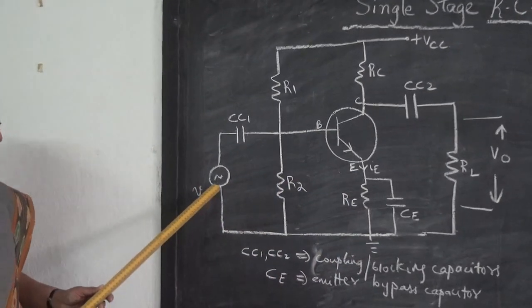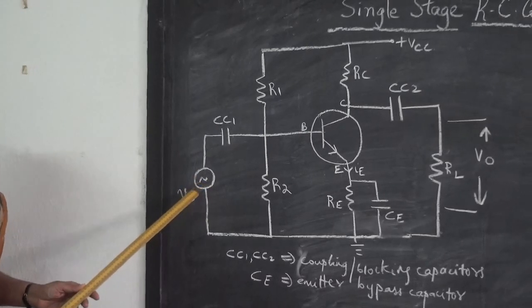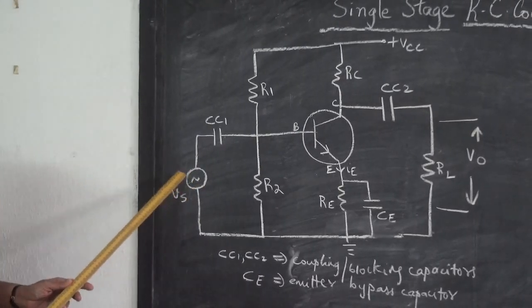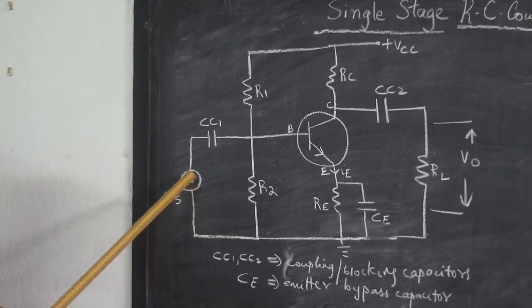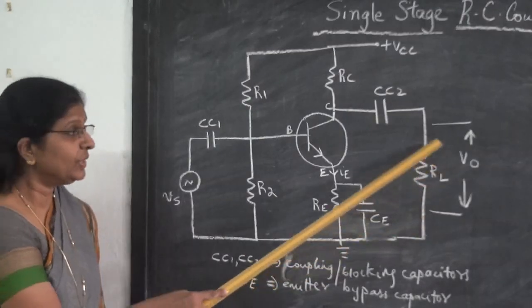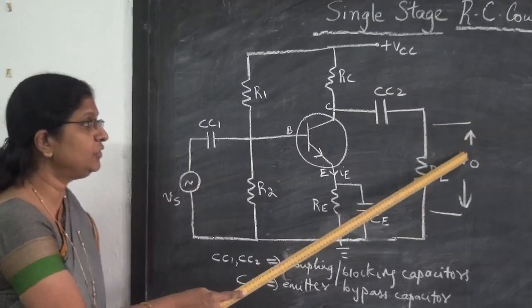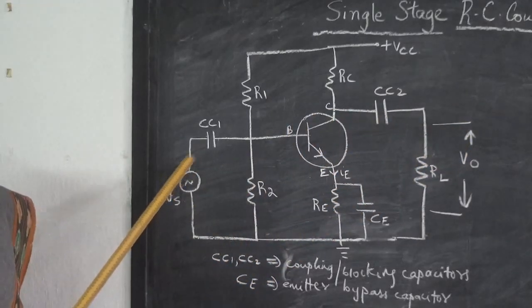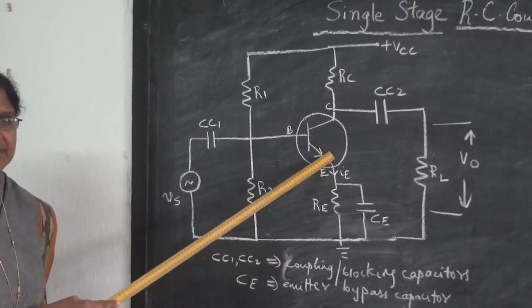Vs is our input voltage which has to be amplified. It is a small input voltage. Now if you give an extremely large input voltage, output will again be distorted. So you have to give a small input voltage and output is taken across the load resistance RL. You get an amplified output voltage which is 180 degrees out of phase with the input voltage. This phase reversal of 180 degrees comes because we use common emitter configuration.